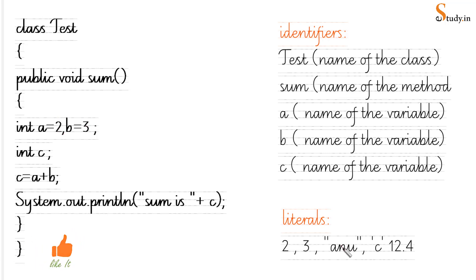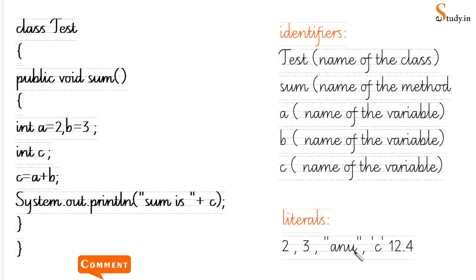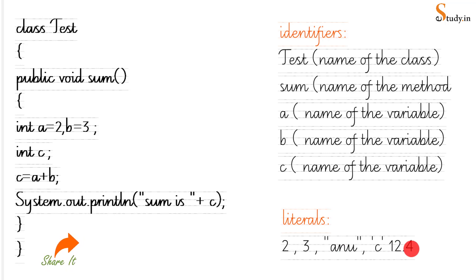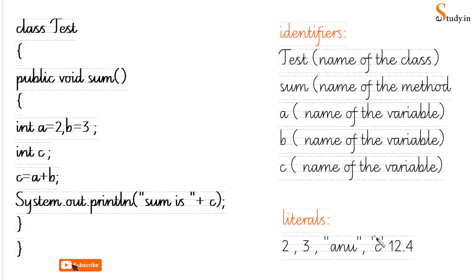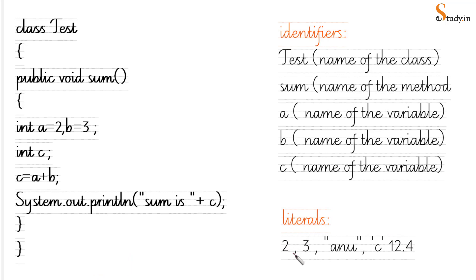What are literals? Literals are the values — for example, 2 and 3 are literals, integer values. Similarly, if you have a string — whatever is written in double quotes with one or more characters — that is a string literal. When you write a single character in single quotes, it is a character literal. We also have decimal literals like 12.4. A literal is basically a constant value which cannot be changed.